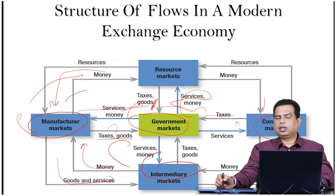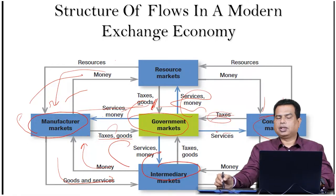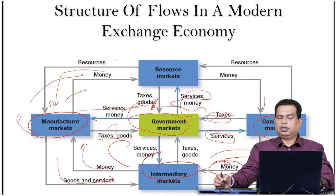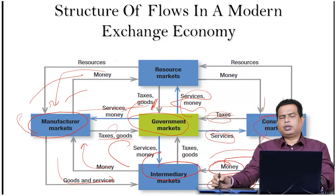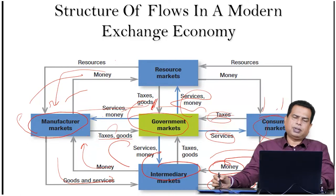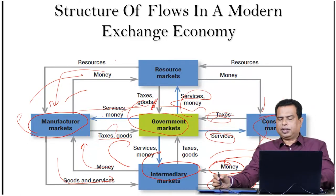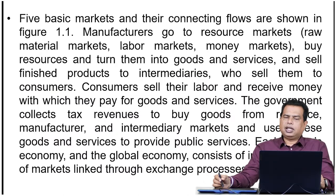Consumer markets also give taxes to the government, and in lieu of that the government provides the services required by consumers. Consumer markets are also linked with the intermediate markets — giving them money, and in return goods and services are provided to the consumers. So these are the structures of flow showing how goods, services, and money flow in the modern exchange economy. There are five basic markets and their connecting flows shown in this figure.